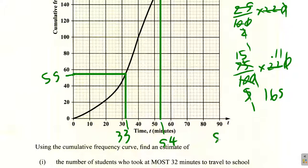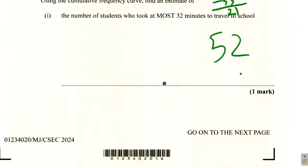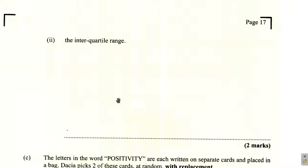So the interquartile range would be 54 minus 33, which would be 21. So the interquartile range would be 21.